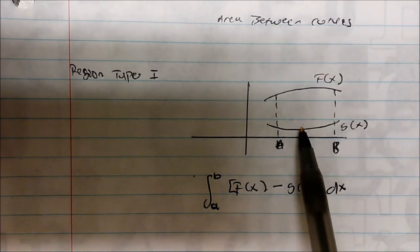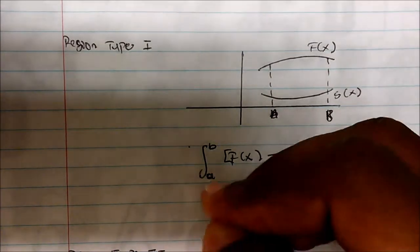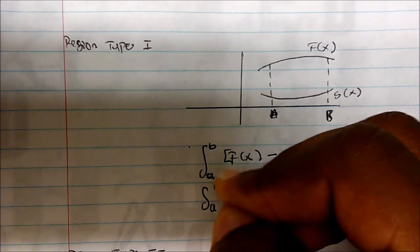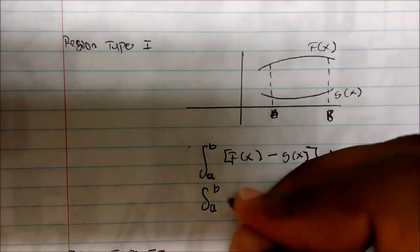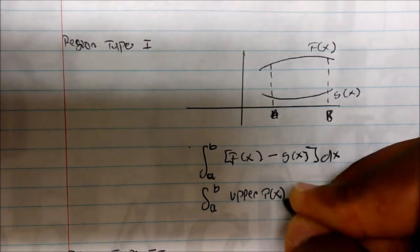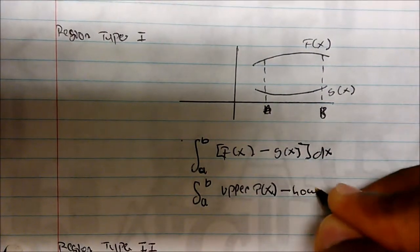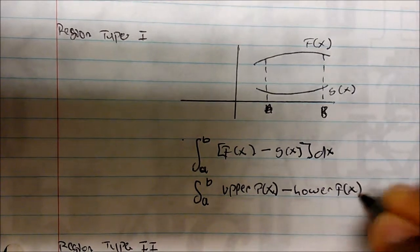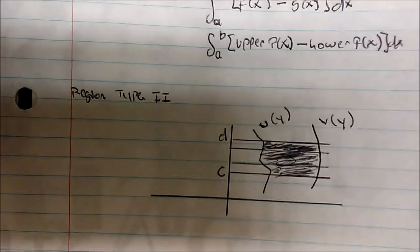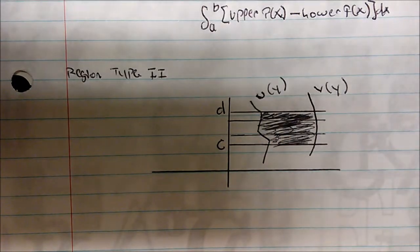This is saying: take the integral of the upper function minus the integral of the lower function. In other words, it's the integral from a to b of the upper function f(x) minus the lower function dx.